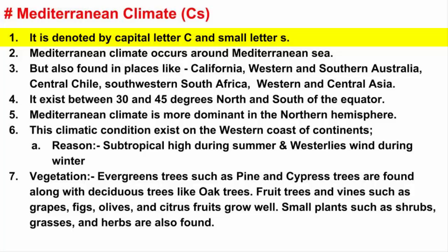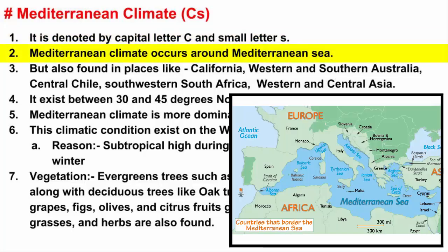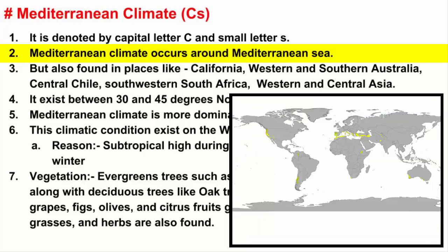As the name suggests, Mediterranean climate occurs around the Mediterranean Sea. But there are other parts of the world where similar climatic conditions exist. They are California, Western and Southern Australia, Central Chile, Southwest and South Africa, and Western and Central Asia.